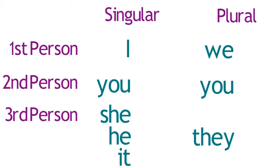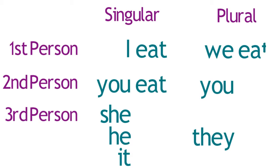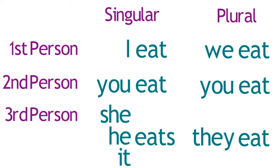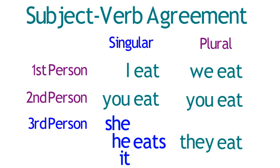In English, most present tense verbs change slightly when the subject of the sentence is third-person singular. For example, the verb "eat" changes to "eats" with a third-person singular subject. This change is called Subject-Verb Agreement because the form of the verb needs to agree with the subject of the sentence.